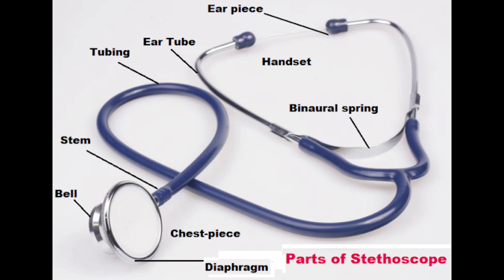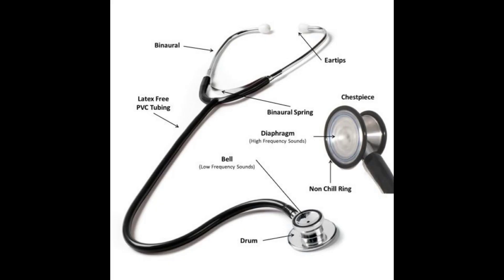A medical stethoscope has three main parts: one, an earpiece; two, a tube; three, a chest piece. A stethoscope is made up of a chest piece, diaphragm or bell, stem, tubing, headset, ear tubes, and ear tips.